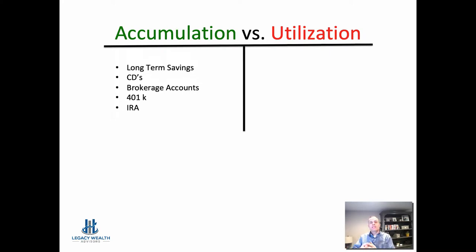Whereas utilization is places that you put your money so that you can use it in the short term. Those types of vehicles are your checking account, a short-term savings account, cash, credit cards, anywhere you're looking to put a dollar so that you can utilize it over the short term.